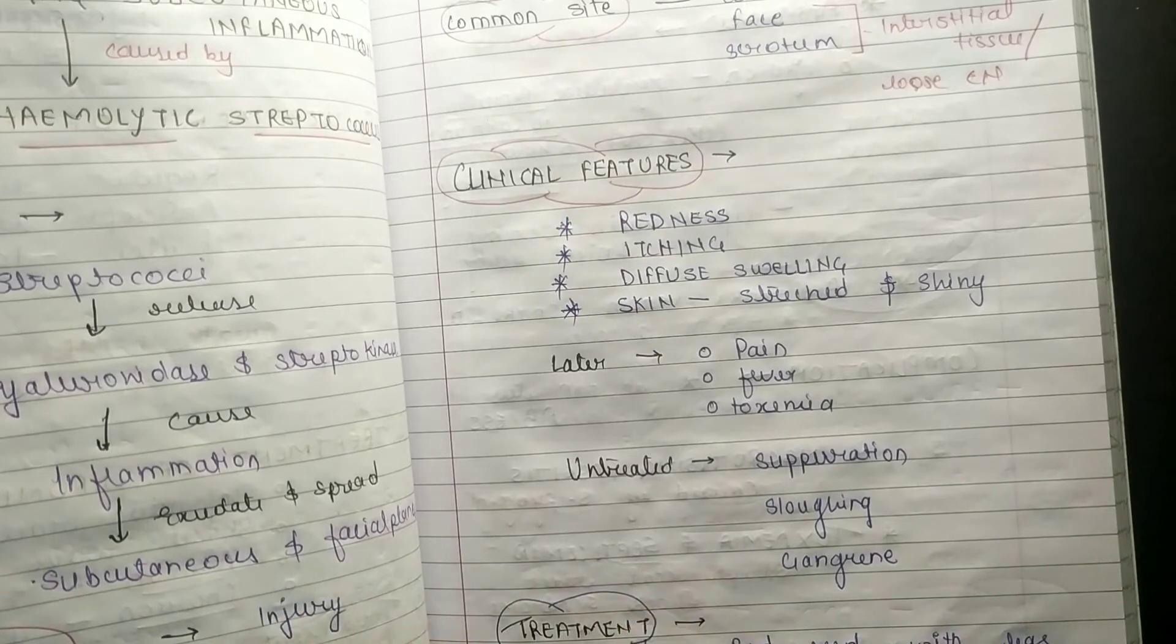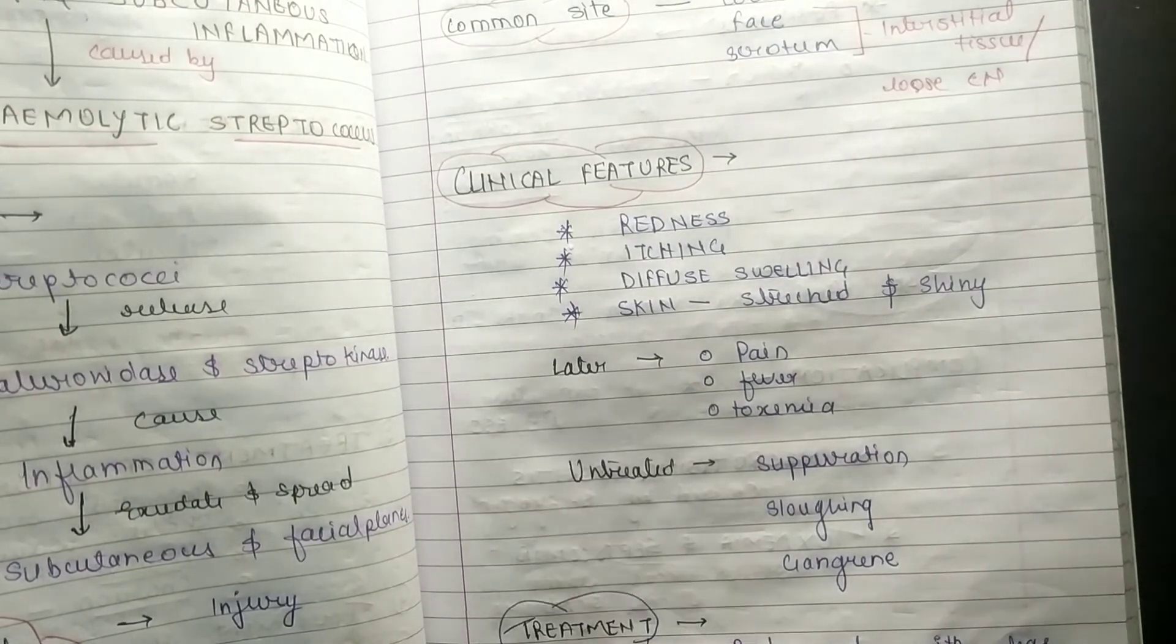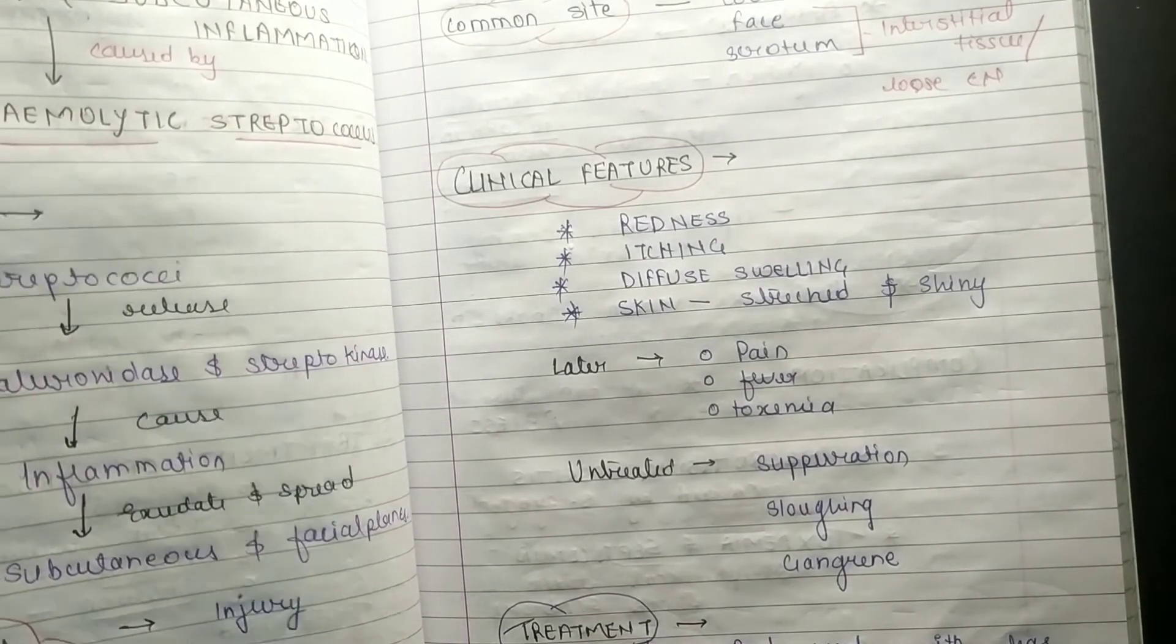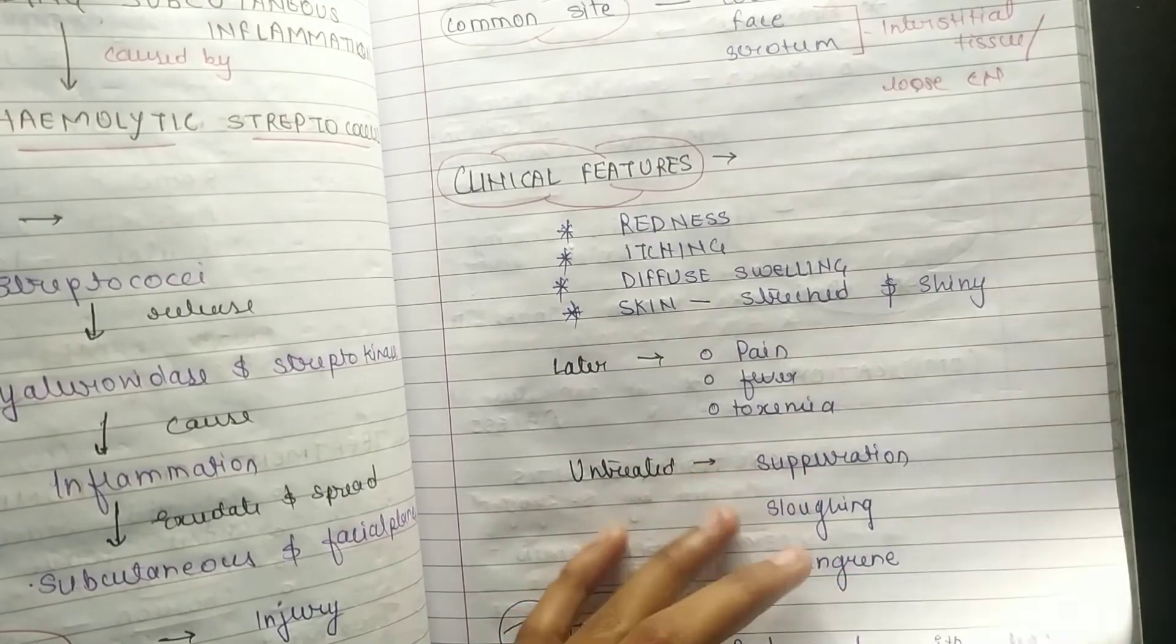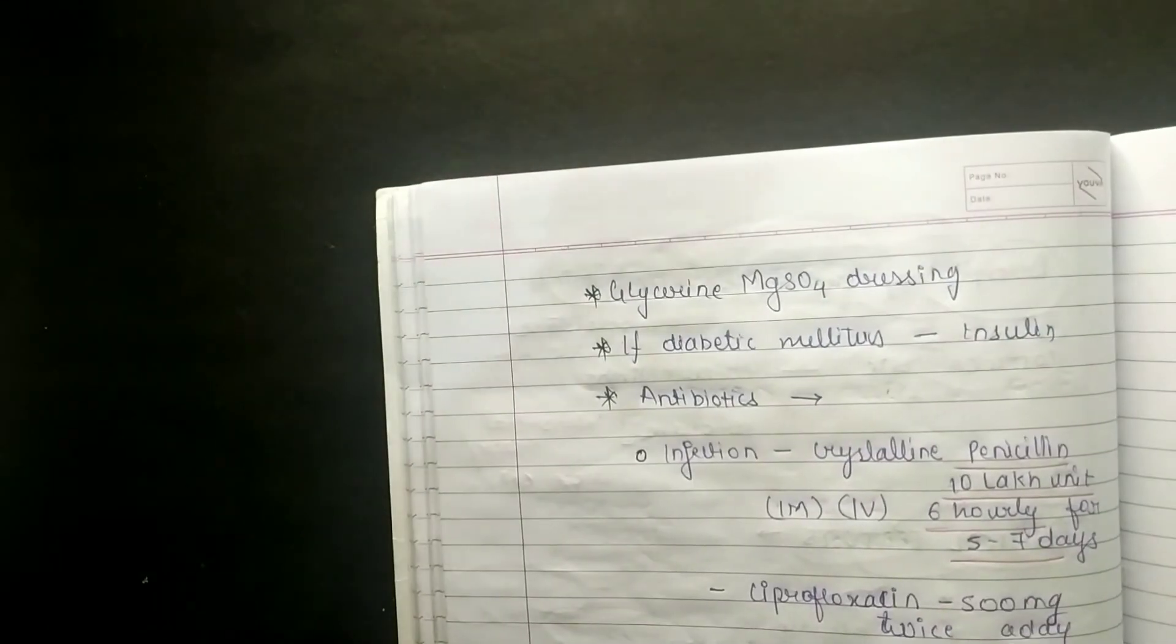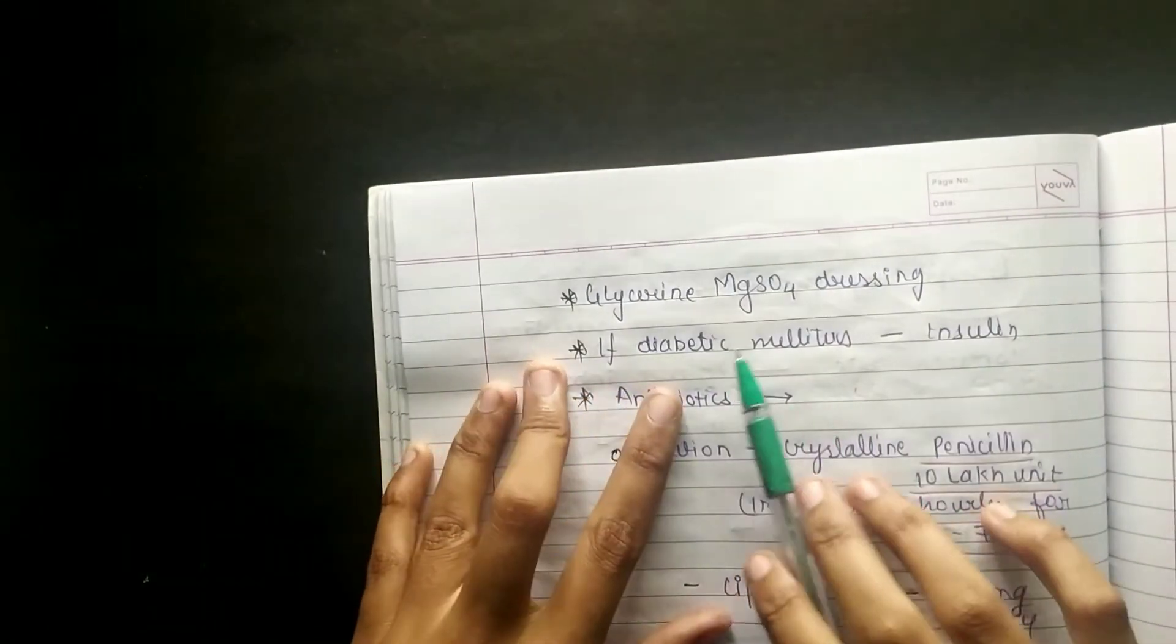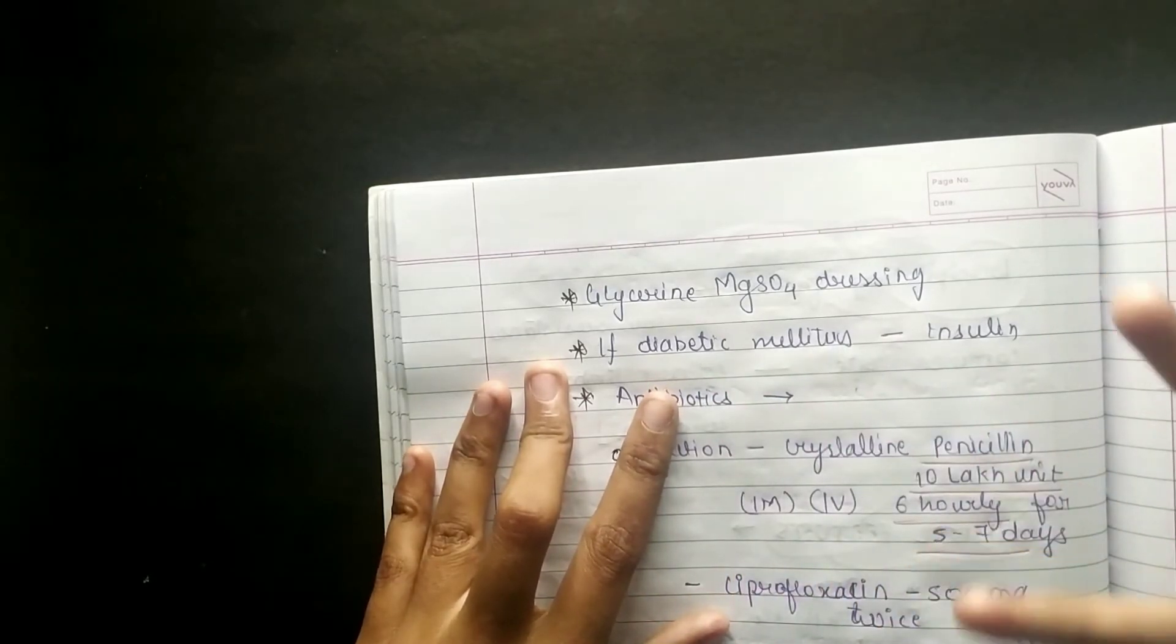Coming to treatment: bed rest with elevated legs - it will reduce the edema. You can give glycerine MgSO4 dressing. If the patient is diabetic, giving insulin to the patient is very important.